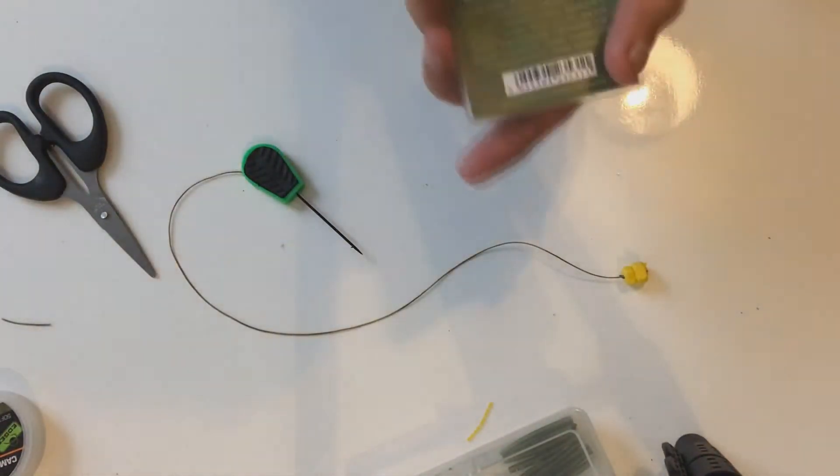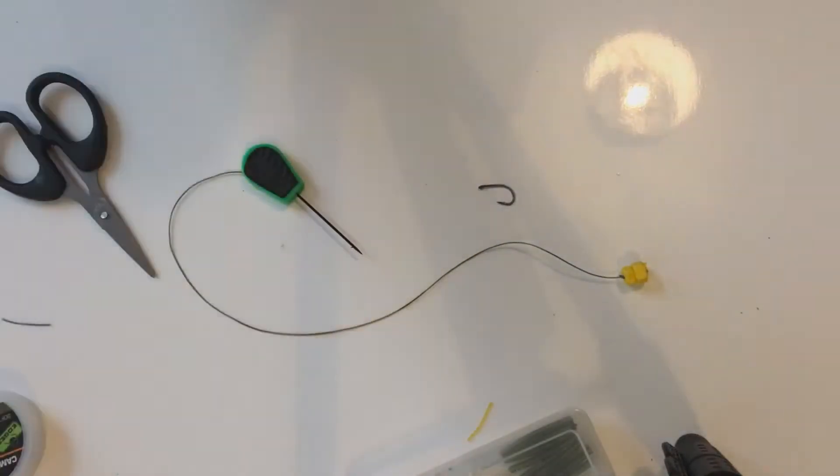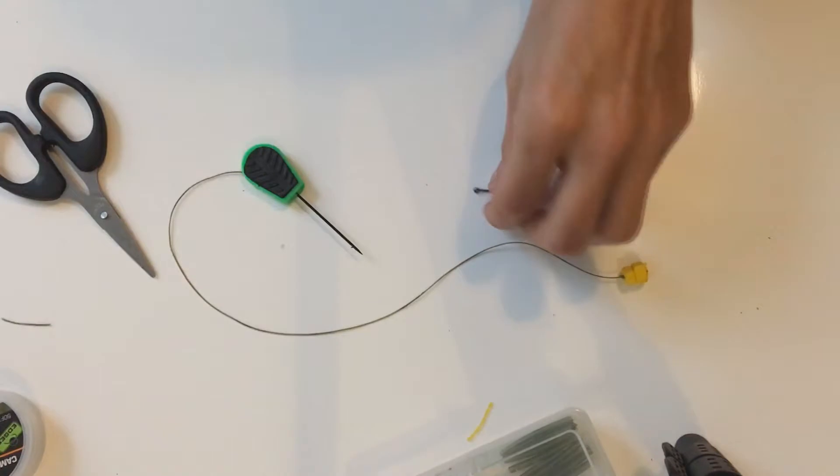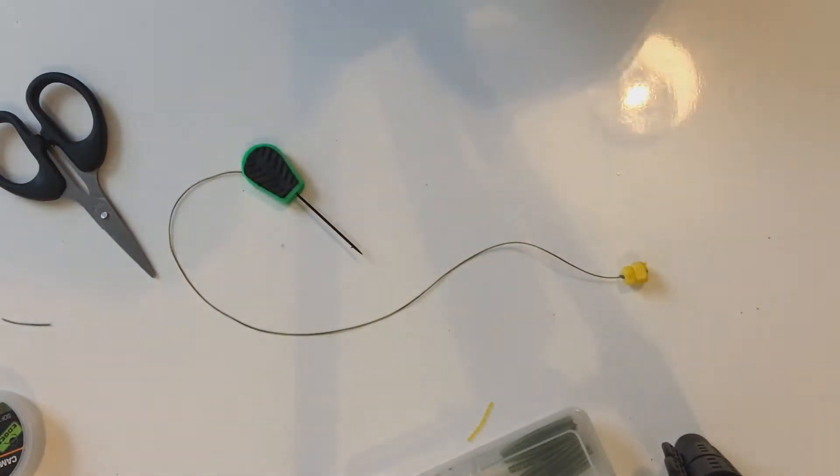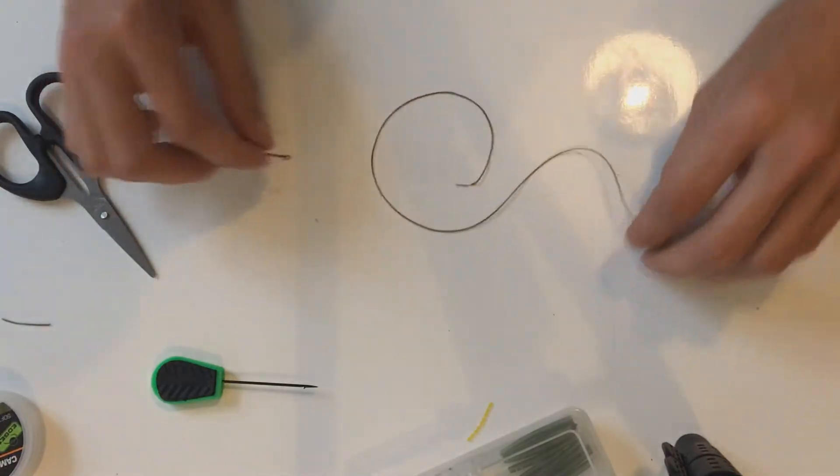So these are the Cryogen, these are size six. They are also micro barbed which I accidentally bought. I bought them by accident because I never use micro barbed, I never use barbed, I always use barbless. I just don't like the feeling of forcing it out the bottom lip of the fish because I imagine it is quite painful.